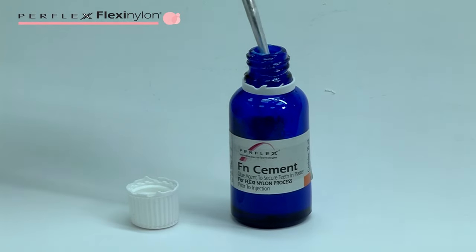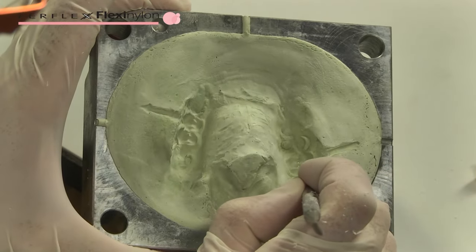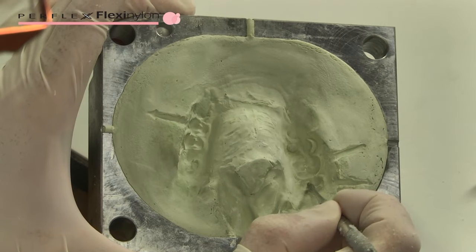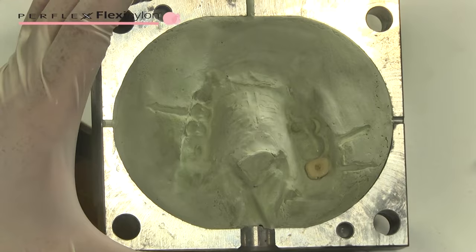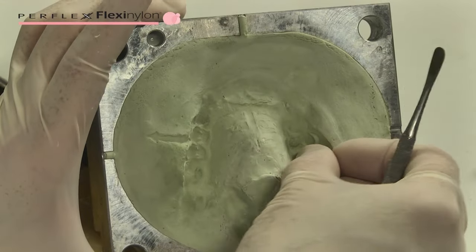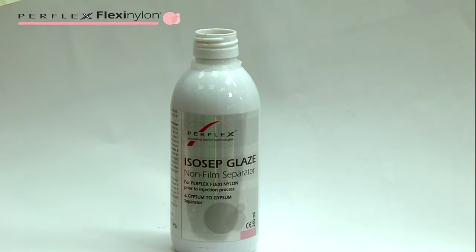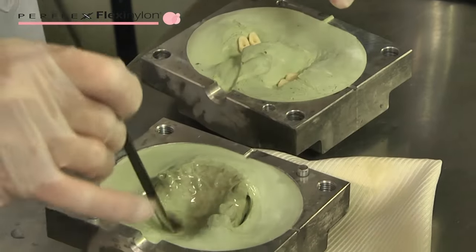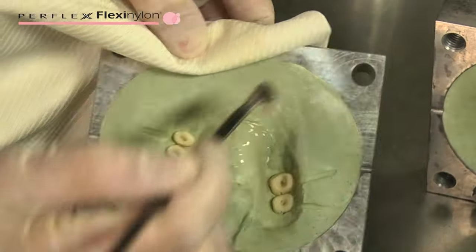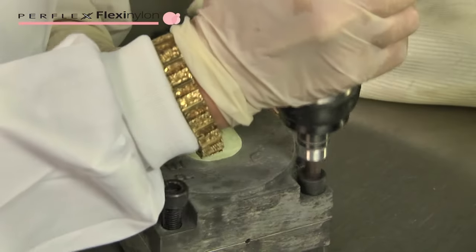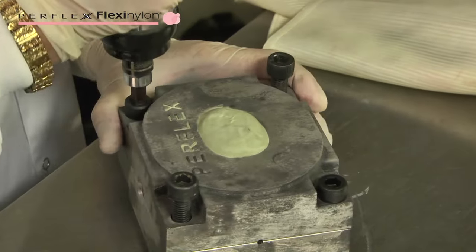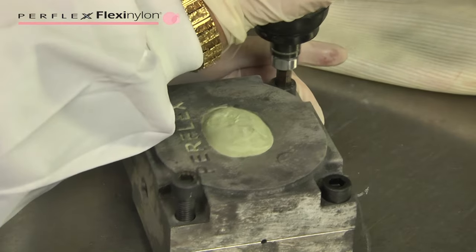Glue the artificial acrylic into the gypsum cavities with FN cement adhesive, available at Perflex, using just a very small amount to secure the teeth so that they do not move during injection process. Place two coats of isolating separator isosep glaze, available at Perflex, on the plaster surfaces corresponding to the denture area only. Close the flask with four screws, manually. Now the flask is ready for injection.